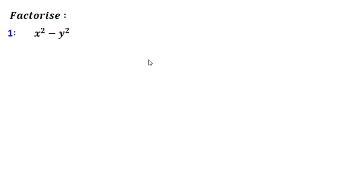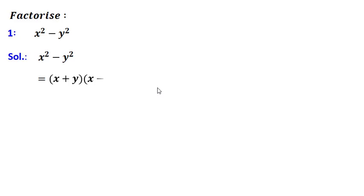The first problem is x squared minus y squared. This x squared minus y squared can be written as (x + y) into (x - y). This is the factorization of x squared minus y squared.